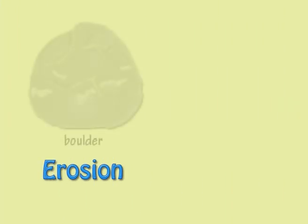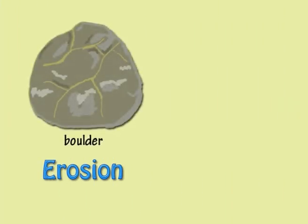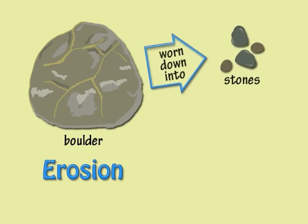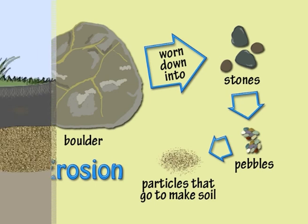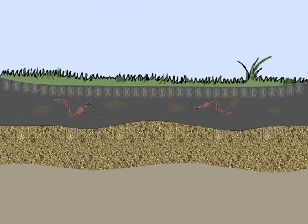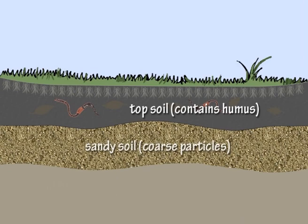Over time, exposed rock can break off and be worn down into smaller stones and pebbles, and eventually into the tiny particles that go to make up different soils. Just as rocks have different characteristics, soils have characteristics that depend on the types of rock they come from.